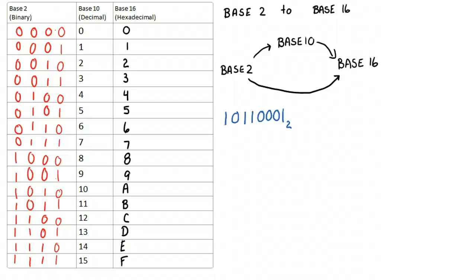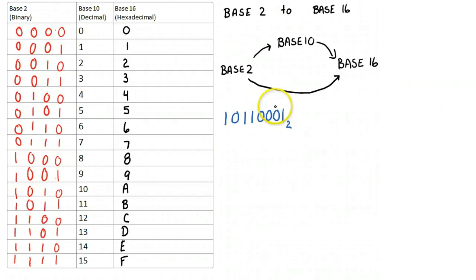Let's pretend I want to convert this binary number into base 16. Well, like I said, all we know so far is that to convert from base n, we can convert to base 10, and we can convert from base 10 to base m, some other base. So I would have to first convert this to base 10, and then convert that base 10 value to base 16, which I could do.